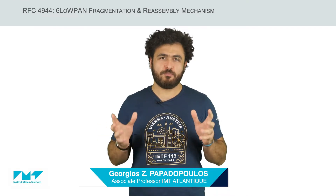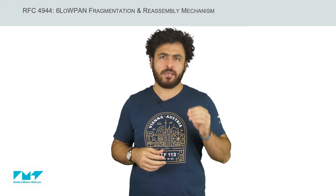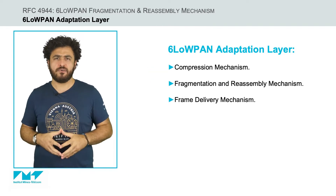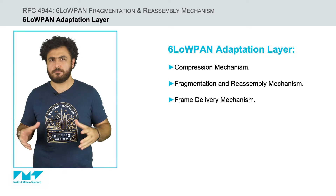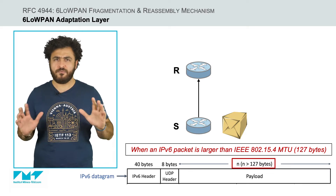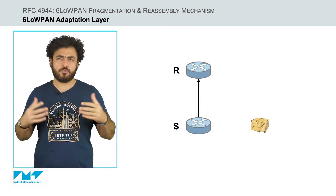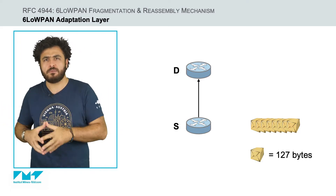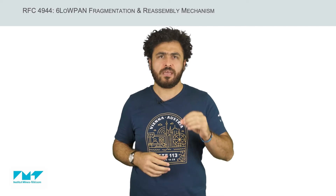Hi, I am Georgios Papadopoulos and welcome to this video on 6LoWPAN fragmentation and reassembly mechanism defined in RFC 4944. The 6LoWPAN adaptation layer defines compression, fragmentation and reassembly, and frame delivery mechanisms for IPv6 datagrams. As specified in RFC 4944, when a compressed IPv6 datagram does not fit within a single IEEE 802.15.4 frame, fragmentation is required to split the large datagram into multiple fragments of up to 127 bytes. Let us now dive deeper to see the whole process of 6LoWPAN fragmentation and reassembly operation.